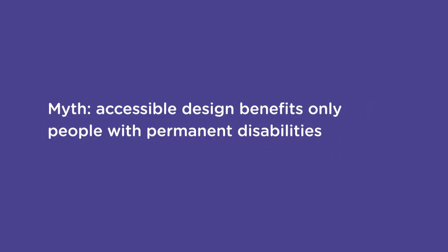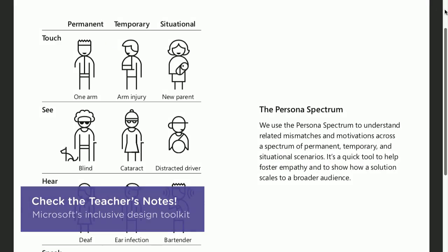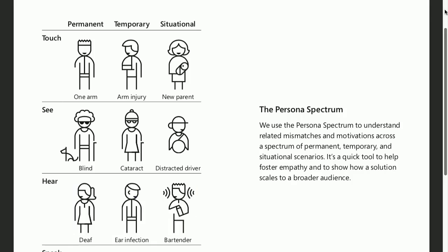Starting with the idea that accessibility benefits only those with a permanent physical or cognitive disability. Microsoft is one company with a firm commitment to accessibility. Looking at Inclusive 101, a manual from Microsoft's Inclusive Design Toolkit, the PDF illustrates various types of disabilities, including reasons a user might only be able to operate their mobile device with one hand.